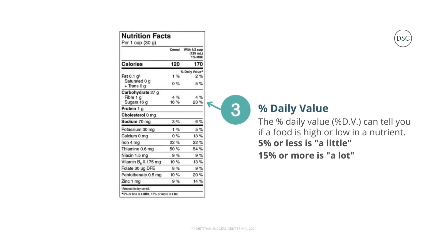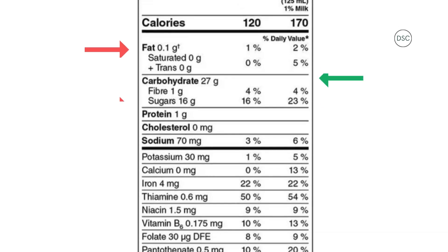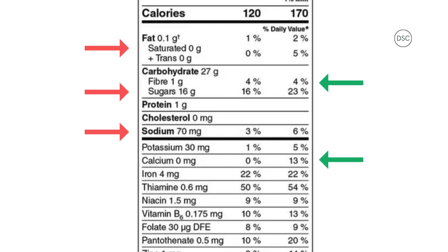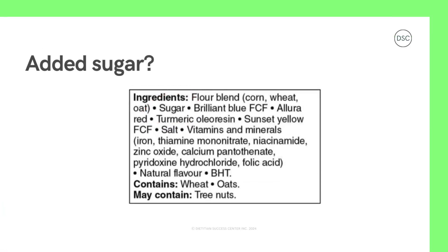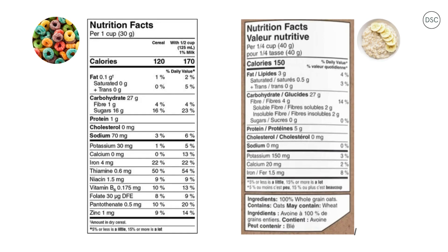Step three — look at the percent daily value to determine which nutrients this food has a little or a lot of. As a reminder, five percent or less is a little, and 15 percent or more is a lot. This food has zero percent saturated fat, 16 grams of sugars at three percent, four percent sodium, four percent fiber, one percent potassium, zero percent calcium, and 22 percent iron. Step four — determining which nutrients you are aiming for more or less of. Let's say we are looking to increase fiber and reduce added sugars. When we look at the ingredient list, we can see sugar is listed as the second ingredient.